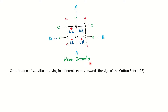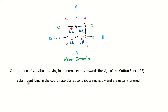We will see the contribution of different sectors towards the Cotton effect. First, substituents lying on the coordinate planes — plane A and plane B — will contribute negligibly, meaning we ignore these groups. For example, the equatorial group on carbon 4 falls on plane A, and equatorial groups on carbons 2 and 3 fall on plane B. So equatorial groups on carbons 2, 6, or 4 are ignored. But axial groups do not fall on any plane and will contribute.